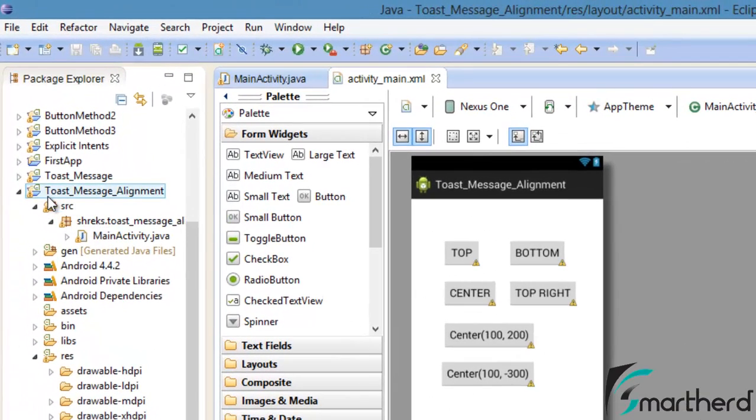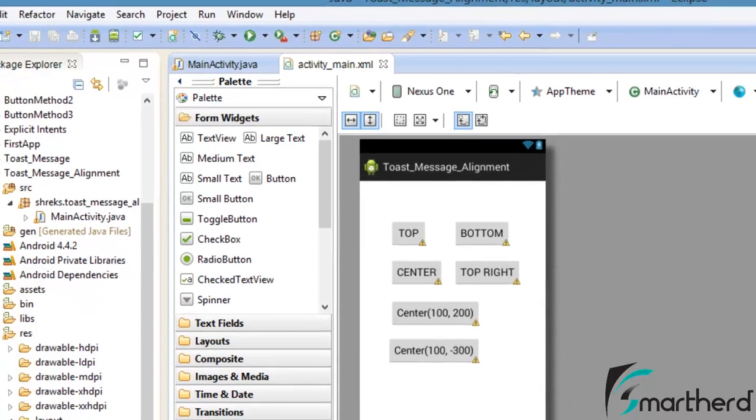Now in the Eclipse I have created an application Toast message alignment. I am having main activity and activity_main.xml.